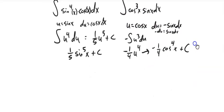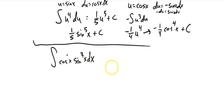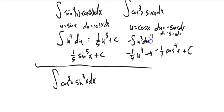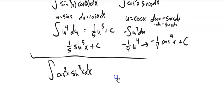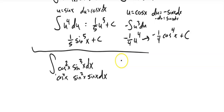Let's do one that's a little more tricky. I notice I don't have just a single trig function — I want that single sine or cosine for my du piece. So I'm going to be clever: I'll write sine cubed as sine squared times sine. Now I have a single sine and a cosine, multiplied together.